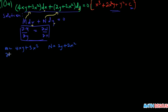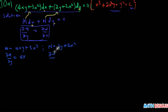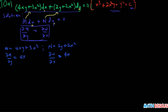So my M is 4xy plus 3x² and my N is 2y plus 2x². Taking the partial derivative of M with respect to y — treating x as a constant — gives 4x, and the constant term goes to zero. Taking the partial derivative of N with respect to x — treating y as a constant — gives 4x from the 2x² term.